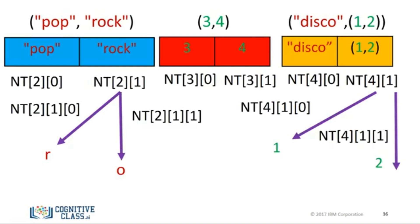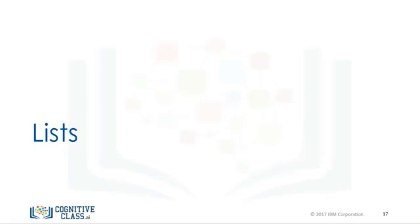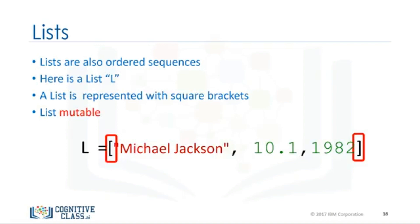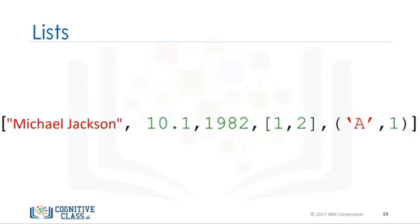Lists are also a popular data structure in Python. Lists are also an ordered sequence. Here is a list L. A list is represented with square brackets. In many respects, lists are like tuples. One key difference is they are mutable. Lists can contain strings, floats, integers. We can nest other lists. We also nest tuples and other data structures. The same indexing conventions apply for nesting.